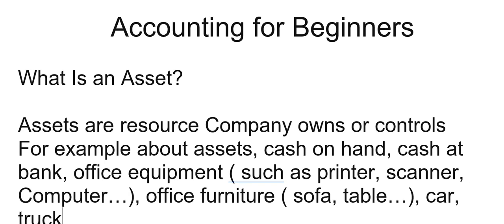For example, office furniture: sofa, table. Also car and truck. So these are assets. Please remember that an asset is a resource that a company owns or controls — such as cash on hand, cash at bank, office equipment such as printer, scanner, computer, office furniture such as sofa, table, cabinet, car, and truck. These are all assets.